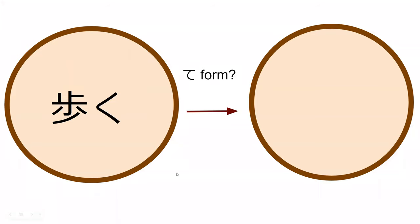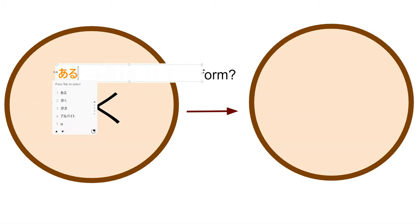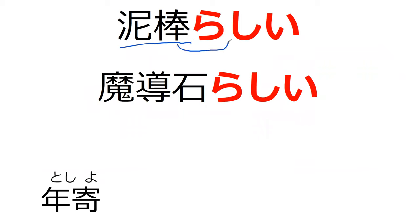Do you happen to know what the て-form of 歩く is? The て-form of 歩く is 歩いて. So the way らしい works is that you have the noun and you just attach らしい to it. It can also be attached to stem form, but for our purposes we're just looking at it with the noun. So どろぼうらしい means something you think is a thief — probably is a thief.